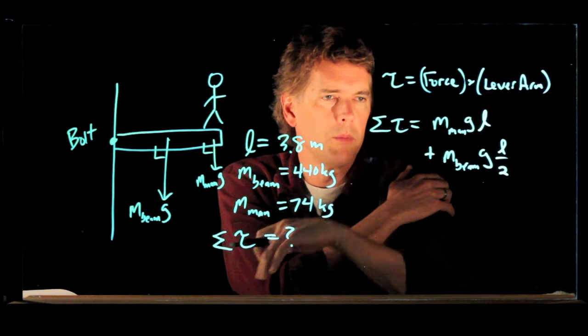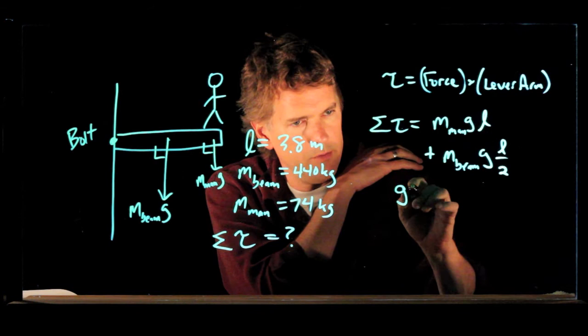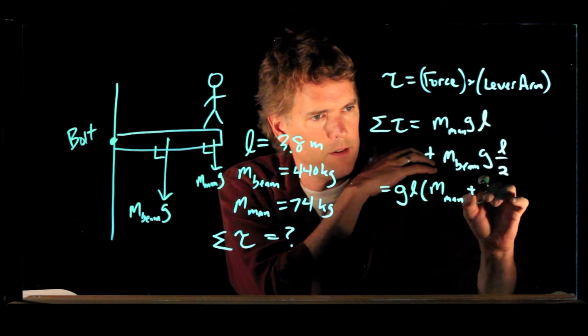Okay, so let's see. We can pull out a g. We can even pull out an L. And we're left with M for the man plus M for the beam over 2.